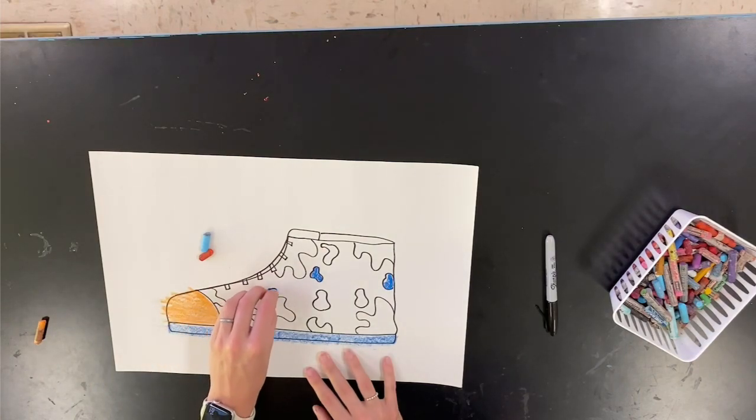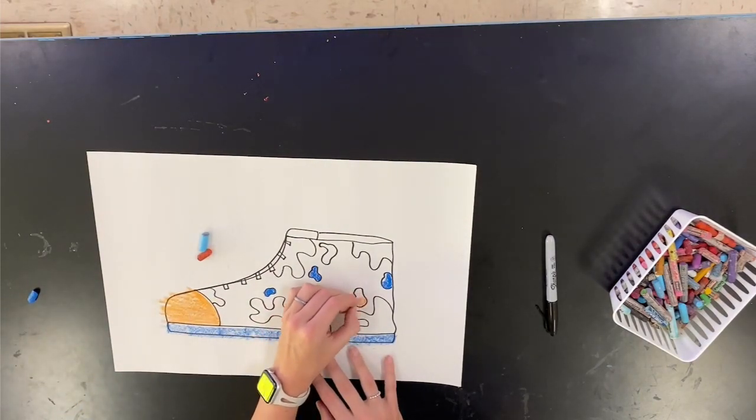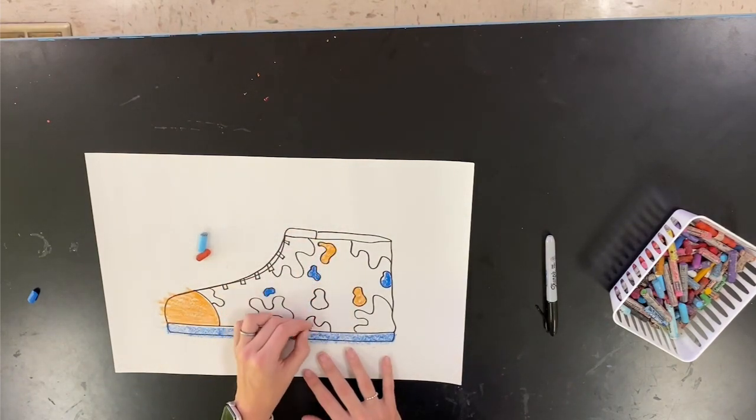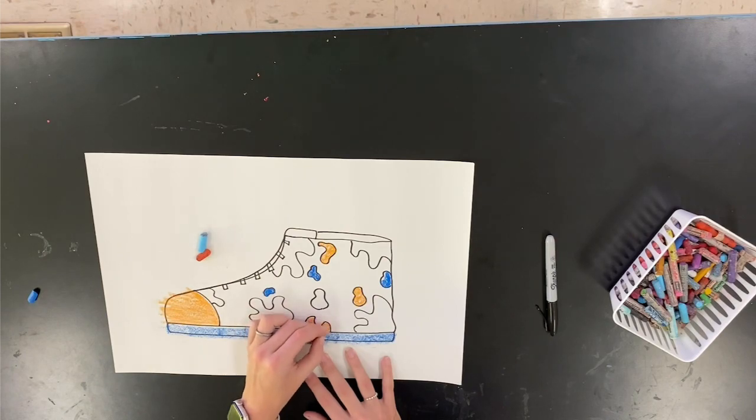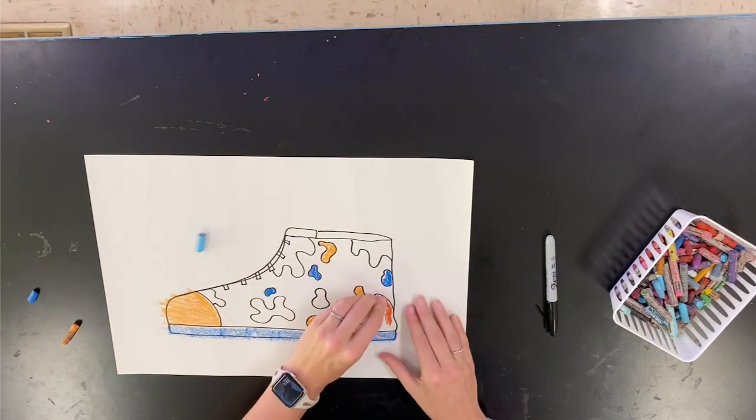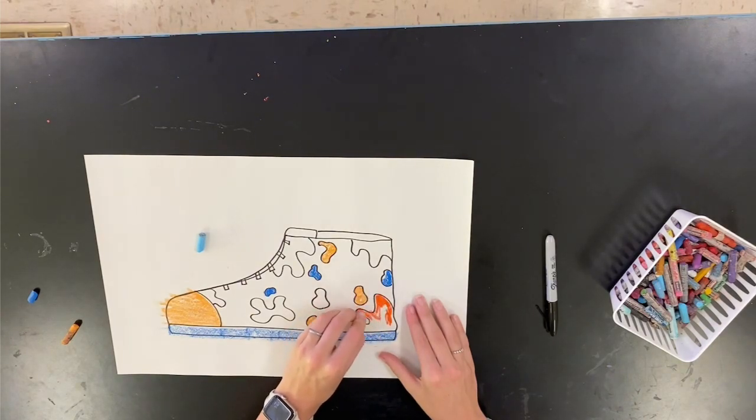And remember complementary colors are either orange and blue, green and red, or purple and yellow. Of course you can also do black and white but you must fill in black spaces in order for it to be a complete black and white drawing.